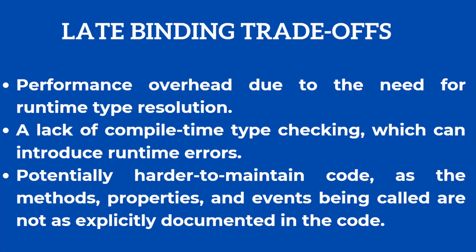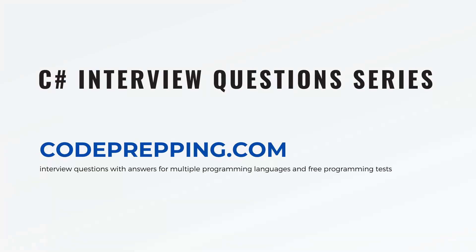Late binding offers flexibility in several scenarios: when we need to interact with COM objects or dynamically loaded assemblies, when we use reflection, and it can also be used for versioning and avoiding dependency issues. However, it comes with several trade-offs: late binding can introduce performance overhead due to runtime type resolution, there is a lack of compile time type checking which can introduce runtime errors, and it is potentially harder to maintain code that uses late binding since the methods, properties, and events being called are not as explicitly documented in the code. This was a quick tutorial on early binding and late binding in C-sharp. Thank you for watching.